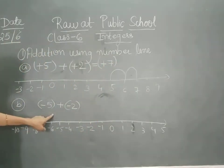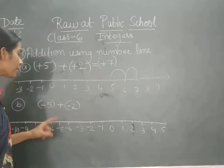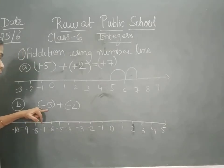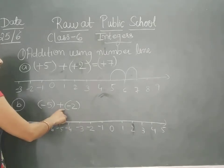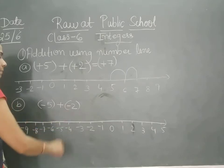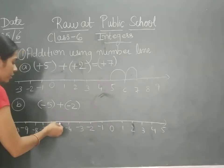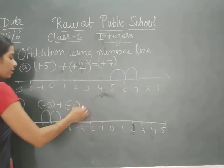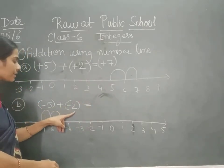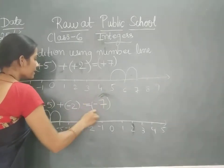In the same way, we are given another example: minus 5 plus minus 2. Here it is minus 2, so on the number line we have to see where minus 2 is. Then we have to move two numbers to the left — 1, 2. So where have we reached? Minus 7. So minus 5 plus minus 2 will give you minus 7.